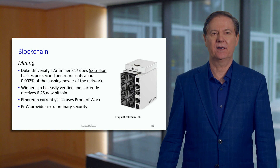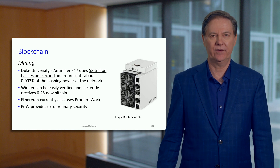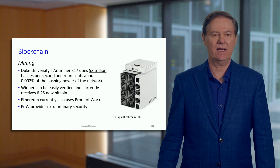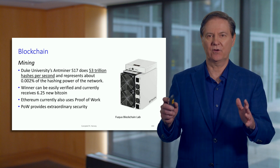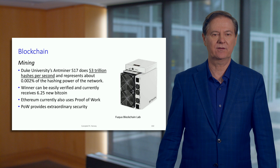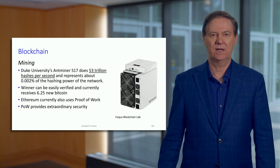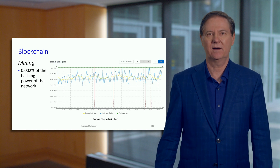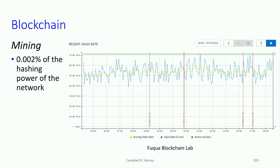We also have an Ethereum mining machine. It uses a different algorithm — the S17 does one thing, the SHA-256, and the Ethereum machine does one thing, the KCOC-256. This is what our dashboard looks like in terms of the number of hashes we're doing per second.